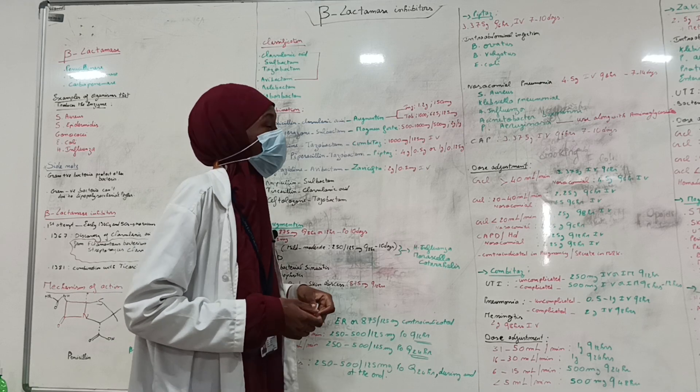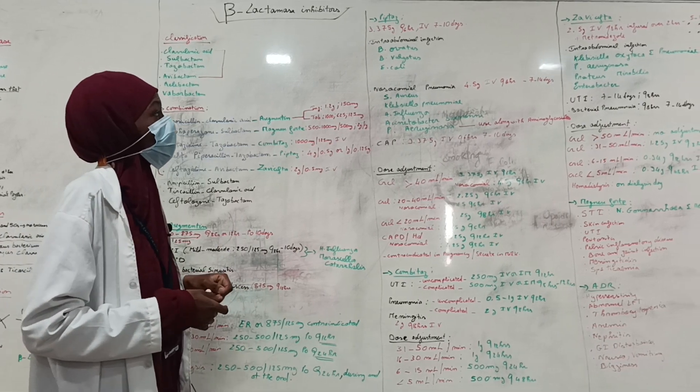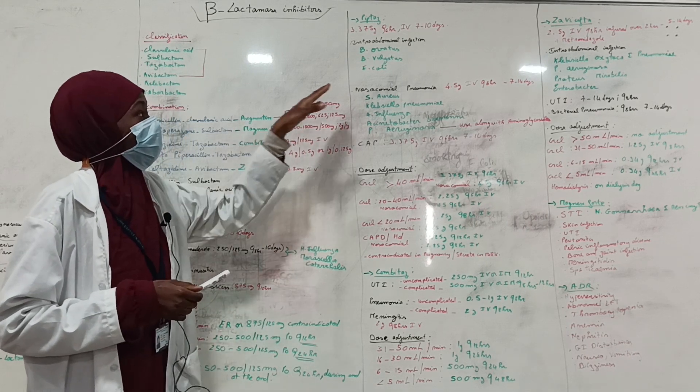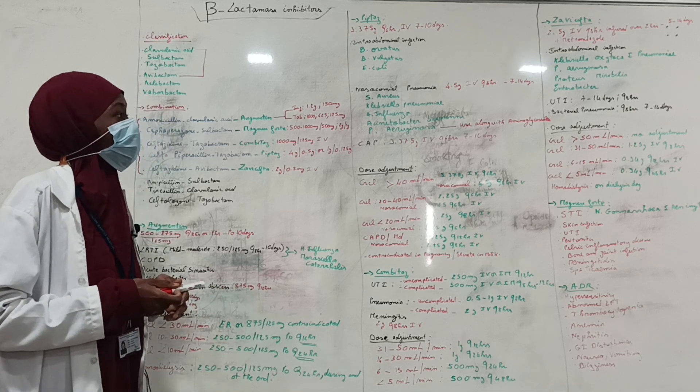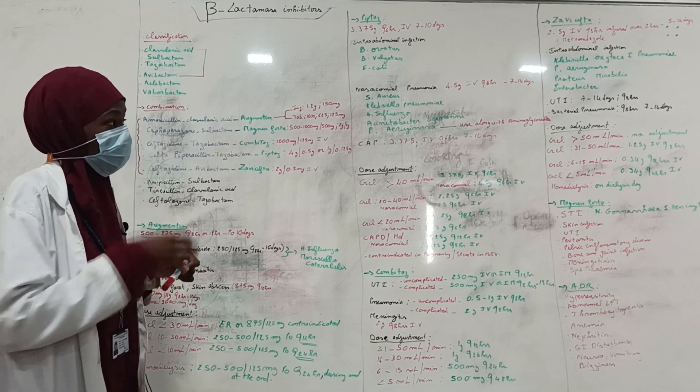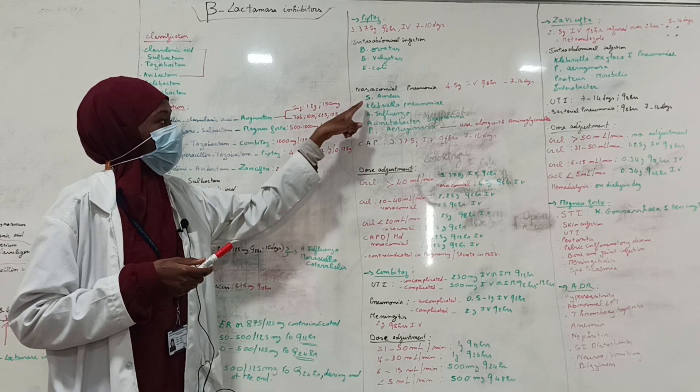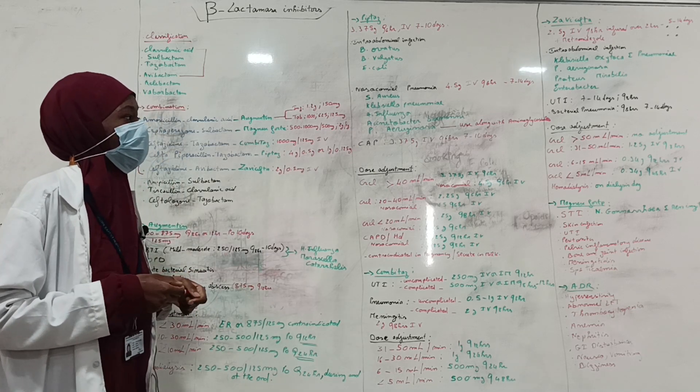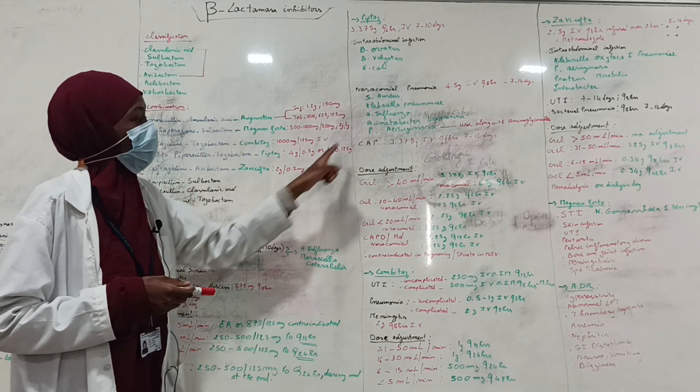Let's see about Piptaz. A dose of 3.375 mg every 6 hours IV for 7 to 10 days is recommended for intra-abdominal infection caused by Bacteroides fragilis, Bacteroides vulgatus, and E. coli. For nosocomial pneumonia, 4.5 g IV every 6 hours for 7 to 14 days is recommended. This nosocomial pneumonia caused by organisms like Staphylococcus aureus, Klebsiella pneumoniae, H. influenzae, Acinetobacter baumannii, and Pseudomonas aeruginosa.